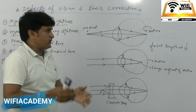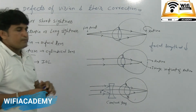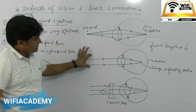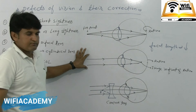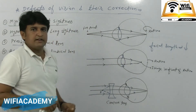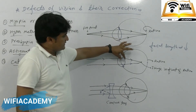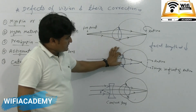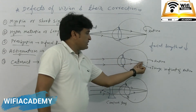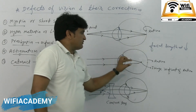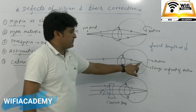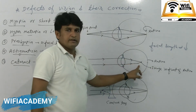But if the defect is present, when light rays coming parallel to the principal axis from infinity enter the eye, the curvature of the lens increases. As the curvature of the lens increases, the converging power increases. This means it converges more strongly, so the image is formed in front of the retina instead of on it.